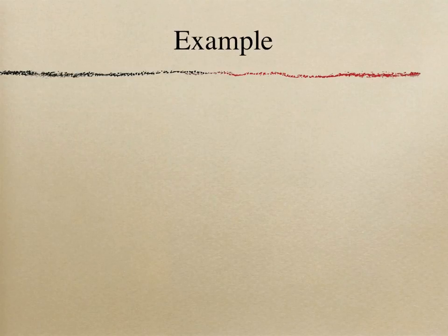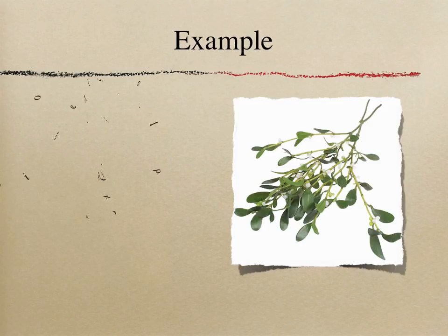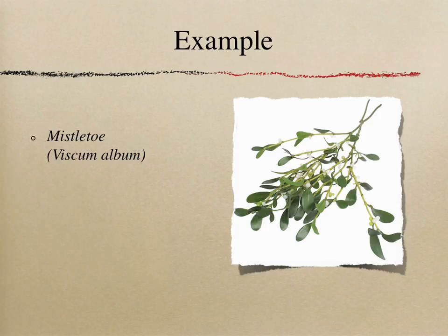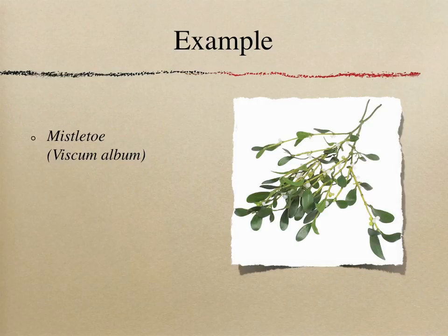Our first example of a parasitic plant is mistletoe. This plant is considered a hemiparasite due to the fact that it gains nutrients from a host but is also capable of photosynthesis. Mistletoe grows among the branches of shrubs and trees. Currently, mistletoe has become a large problem for Scotch pines in Scotland, where a lack of cold winters — something essential for keeping mistletoe growth in check — has allowed mistletoe to kill whole stands of native trees.